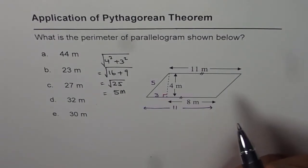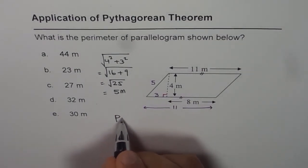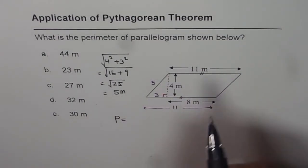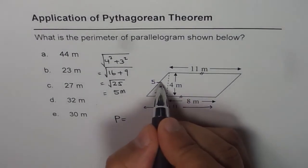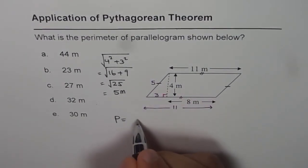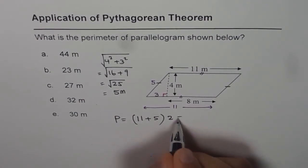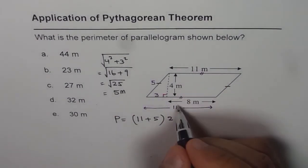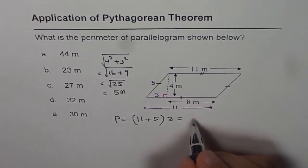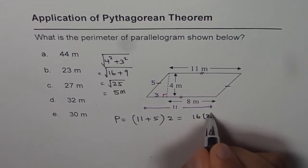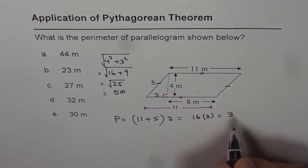Now, what is perimeter? Perimeter is sum of sides, sum of all the sides. So we have these two sides are equal for us. And therefore, it is 11 plus 5 times 2, since we have two sides of each kind: 11, 11, 5, and 5. Which is 16 times 2, and that is 32.